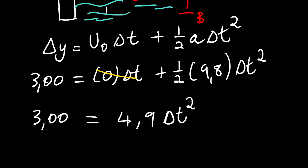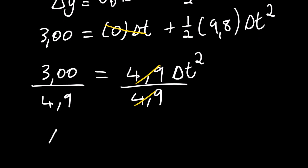We divide both sides by 4.9. This will result into 1 multiplied by change in time squared. We have Δt² equals 3.00 over 4.9.